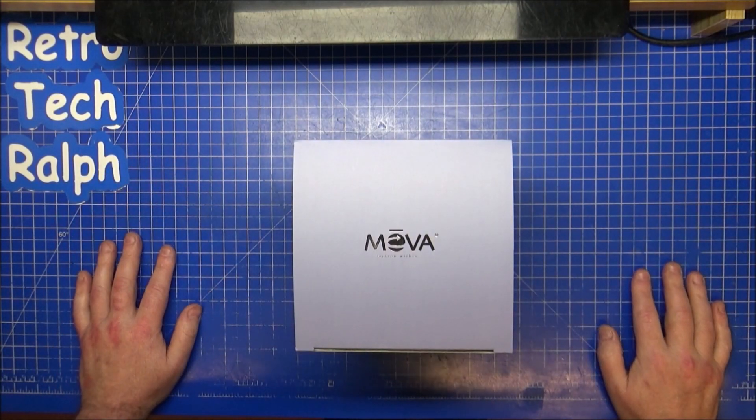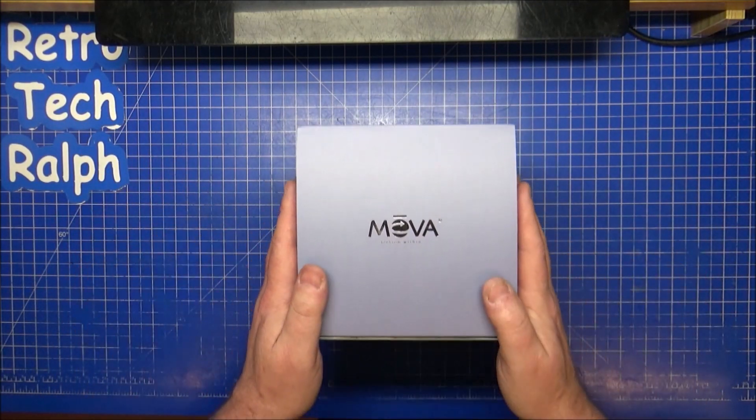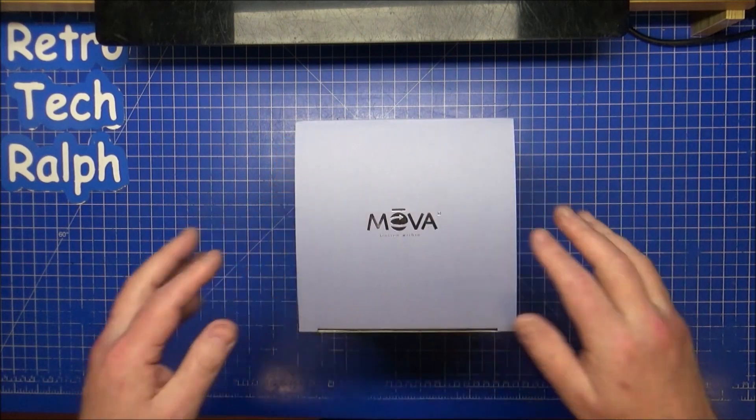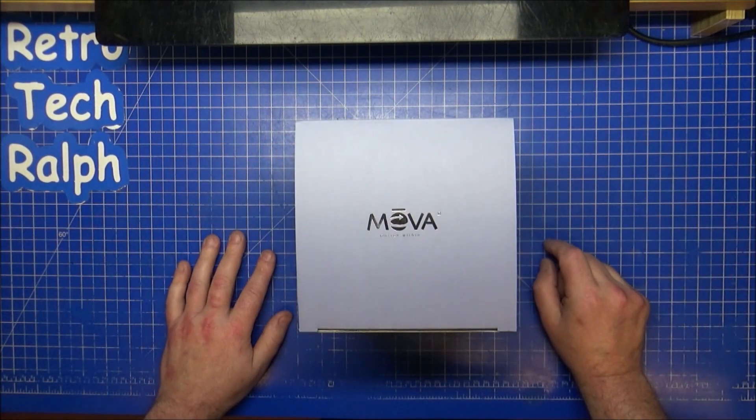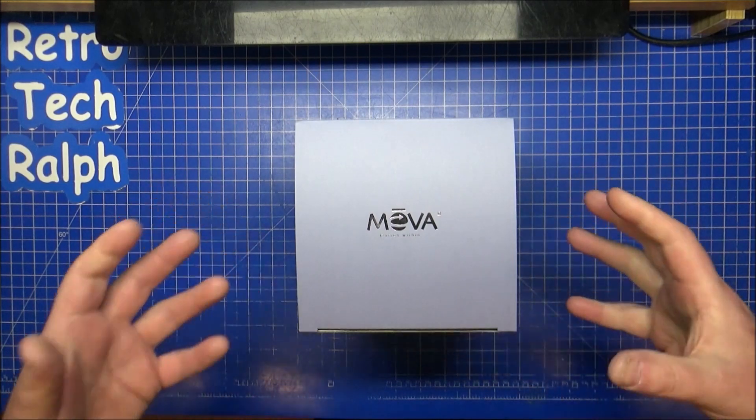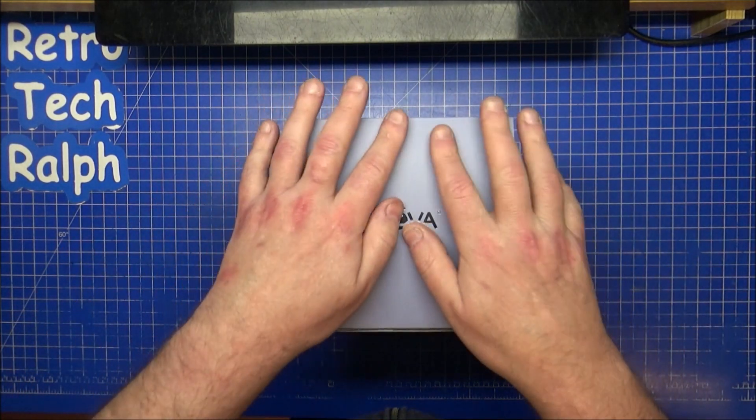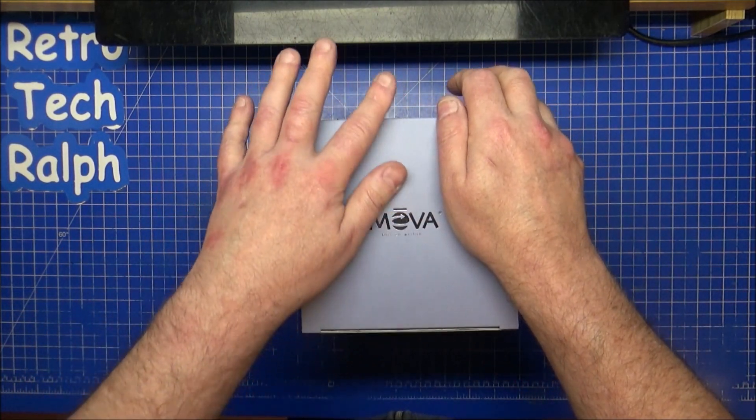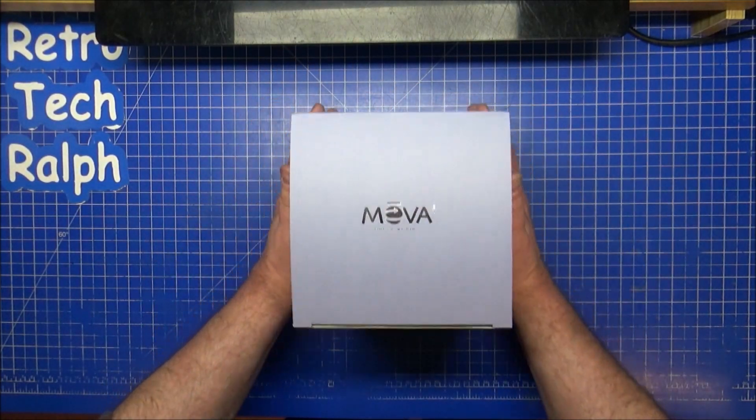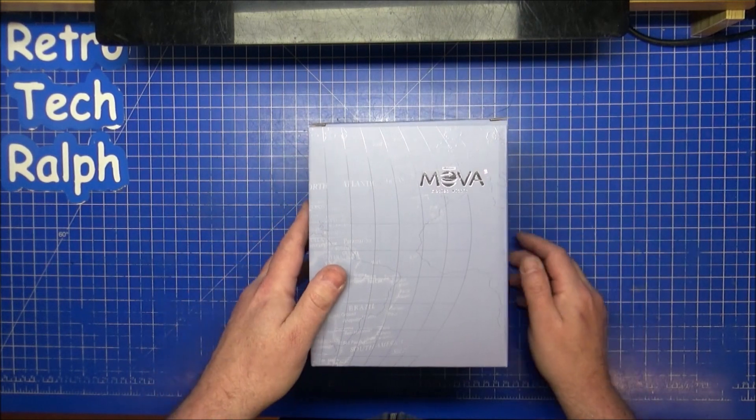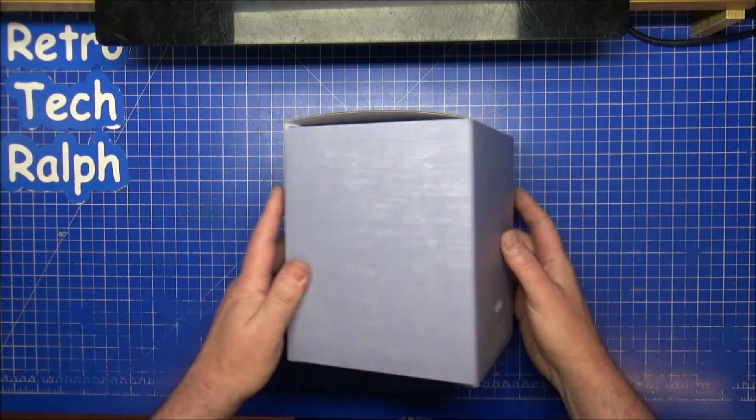Hi guys, Retro Tech Ralph here. I've got another MovaGlobe unboxing for you. As you see from the title, this is Neptune. I've done quite a few so far. Neptune is my latest one I've bought. If I get any money, we'll get some more and there's only a few more left to get the full collection of these.